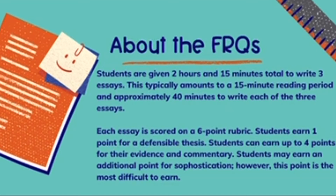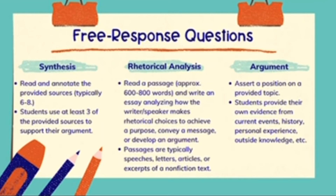The final point on each AP Lang rubric is called the sophistication point. This point is very difficult to earn. There are some ways to earn it, such as having a vivid and persuasive writing style or having a very nuanced argument. Students should know that it is very difficult to earn this point, and it's not something to be discouraged about — you can still do well on the exam even if you don't make a perfect score on your essays. Taking AP Lang and working on these essay types is a really great foundation for the more advanced academic writing you might encounter in the future.